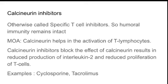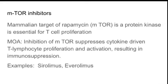The mechanism of action: calcineurin is a protein which helps in activation of T-lymphocytes. When you block calcineurin, T-lymphocyte production is blocked, reducing the proliferation of T-cells. Interleukin-2, an inflammatory marker, also decreases in production, thereby decreasing immune response. Examples of calcineurin inhibitors are cyclosporine and tacrolimus. Tacrolimus is a very important drug given in organ transplantation, especially liver and kidney transplants.